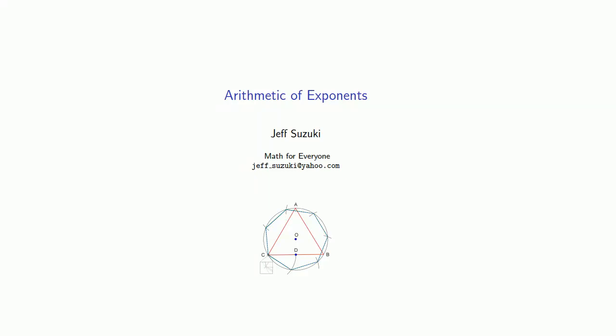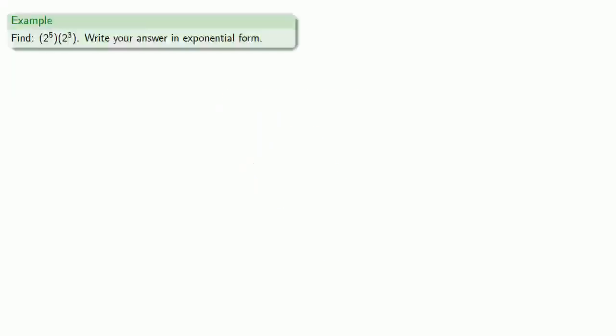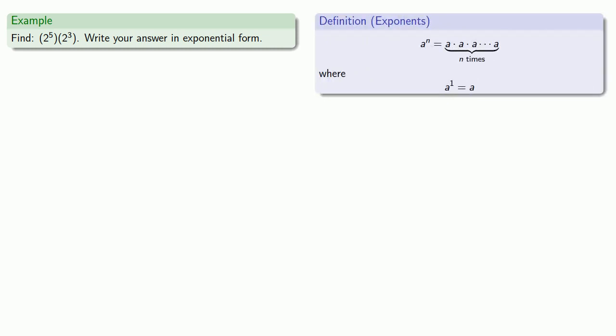So what about the arithmetic of exponential expressions? To begin with, it helps to remember what our definition of exponents is going to be. a to power n is the product of n factors of a. And again, the useful thing to remember is that a to power n is shorthand, and it's not actually an operation.